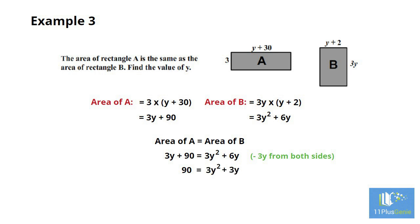We will again use trial and error to find the value of y. Let y equals 4. 4 squared equals 16. Times this by 3 to get 48 and then add 3 times 4 which is 12. 48 plus 12 equals 60 which is too small.